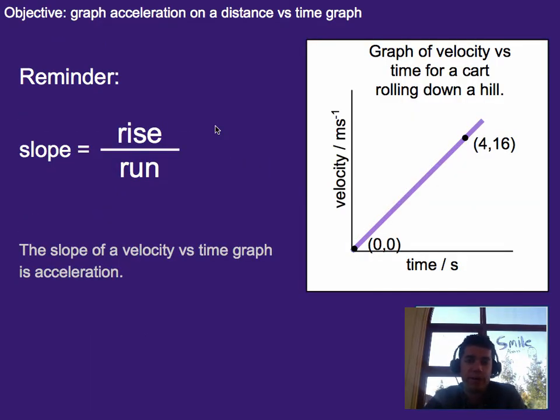Before we get started, a little bit of a reminder. Let's talk about slope. So on a velocity versus time graph, the slope gave us acceleration. The reason why is because literally slope tells you how fast the y value changes with the x value.